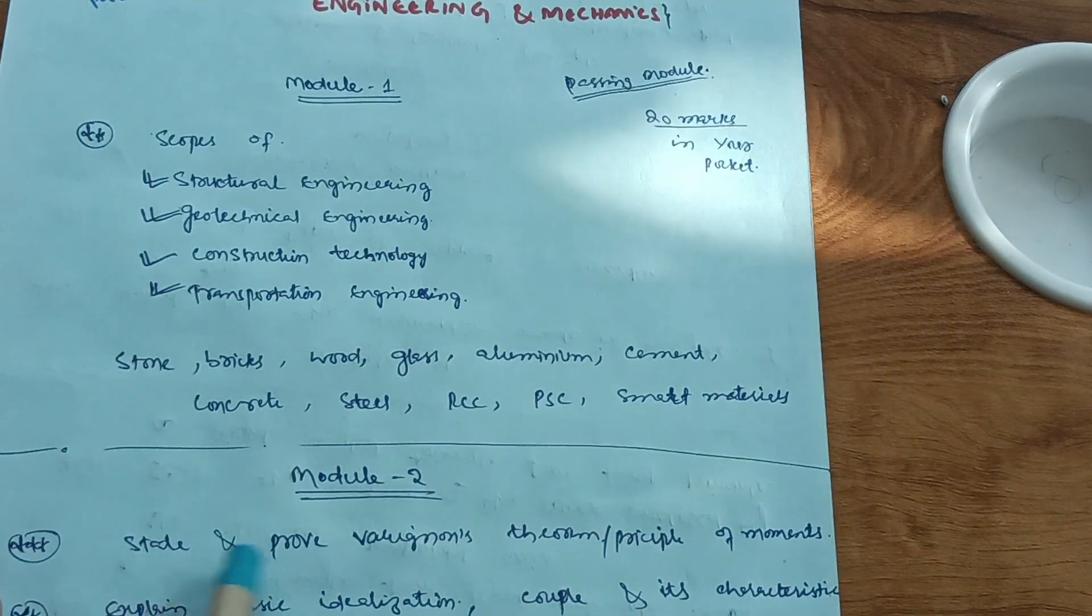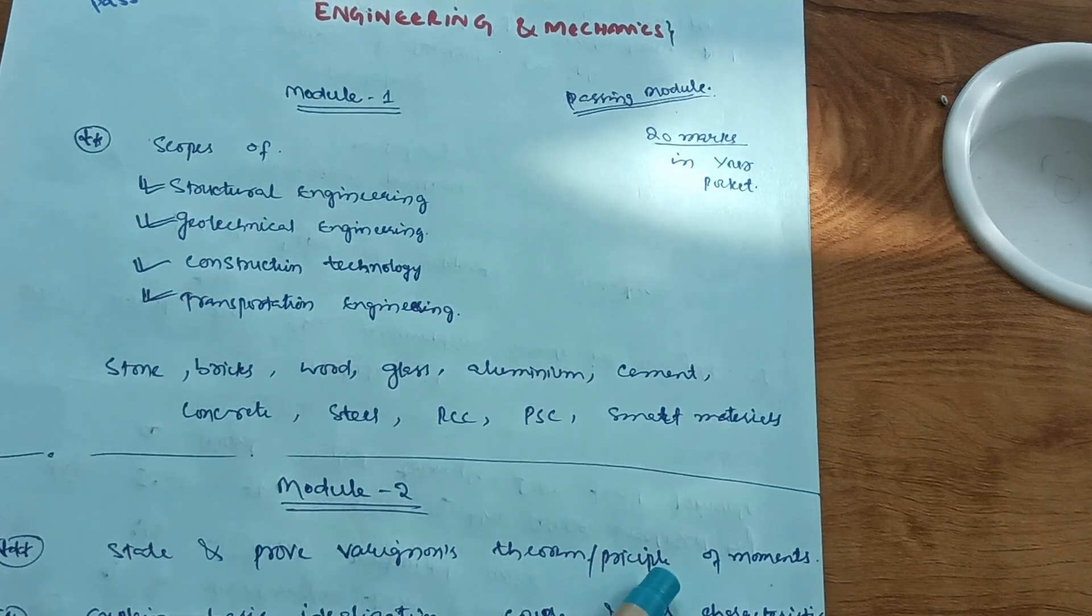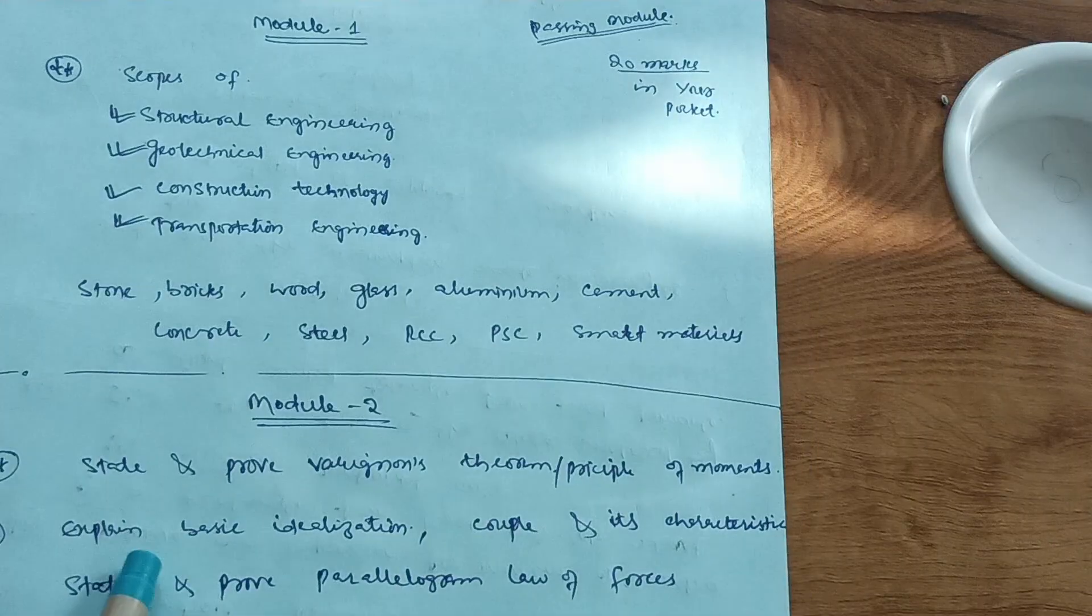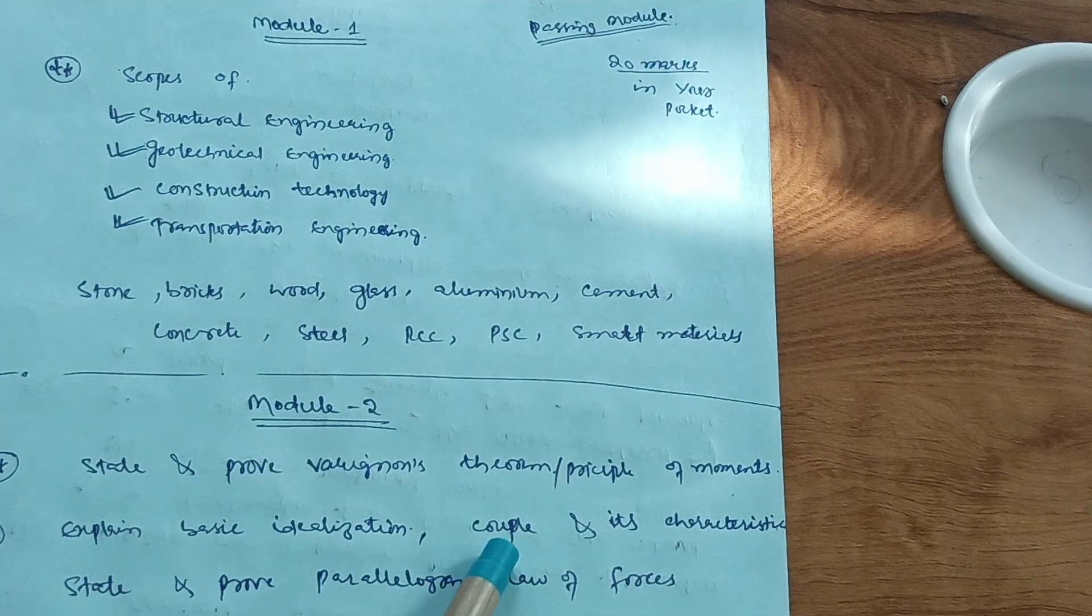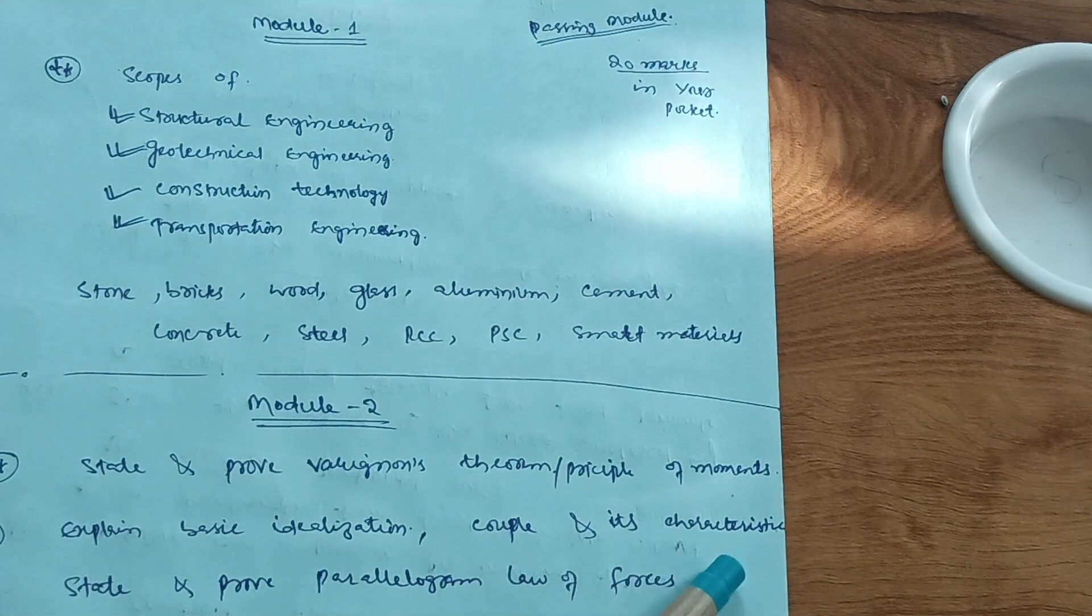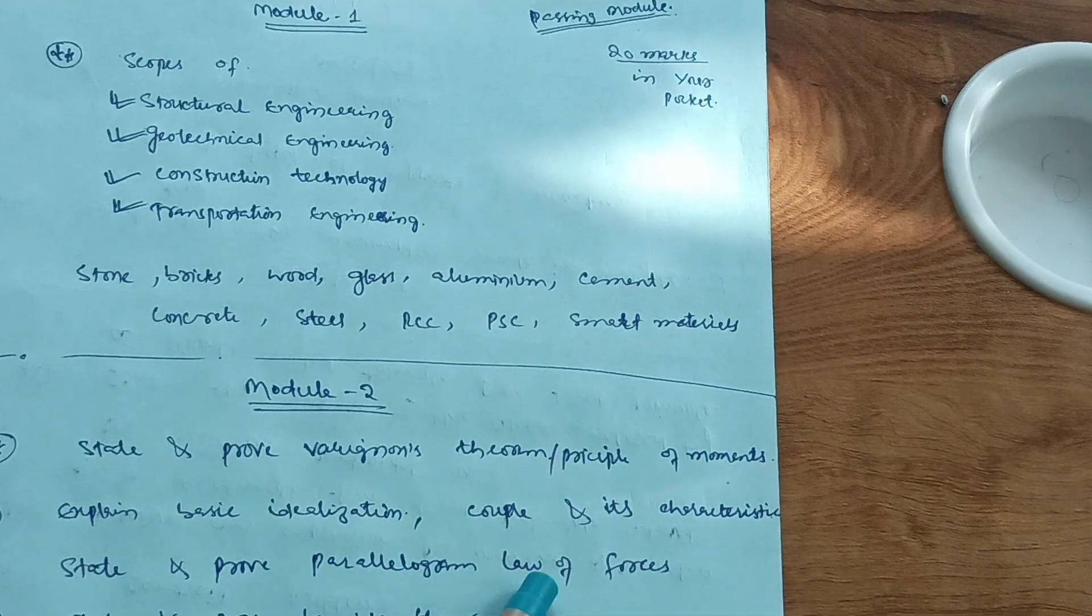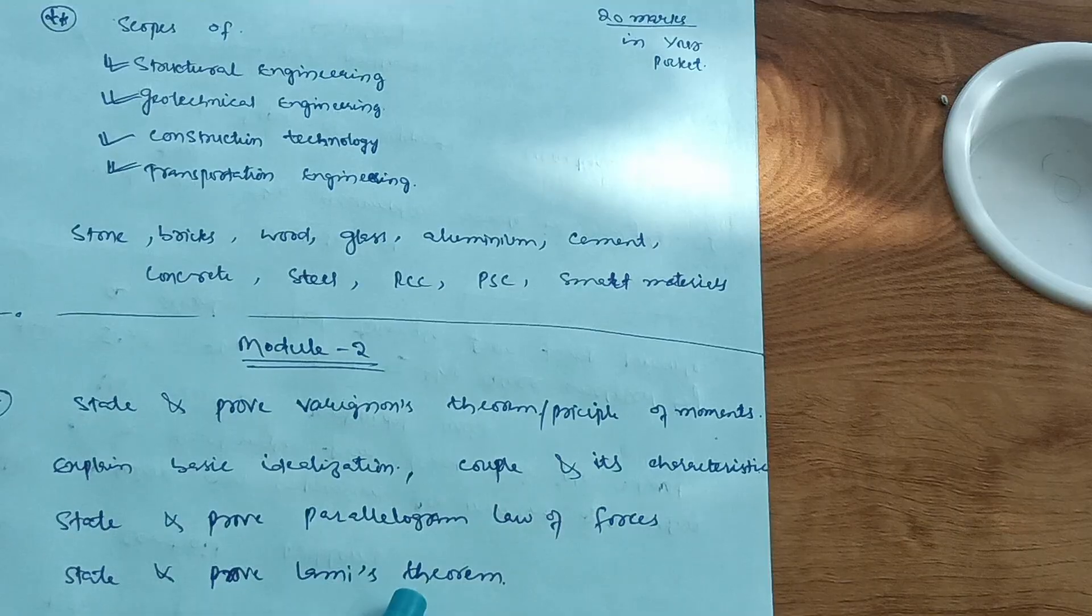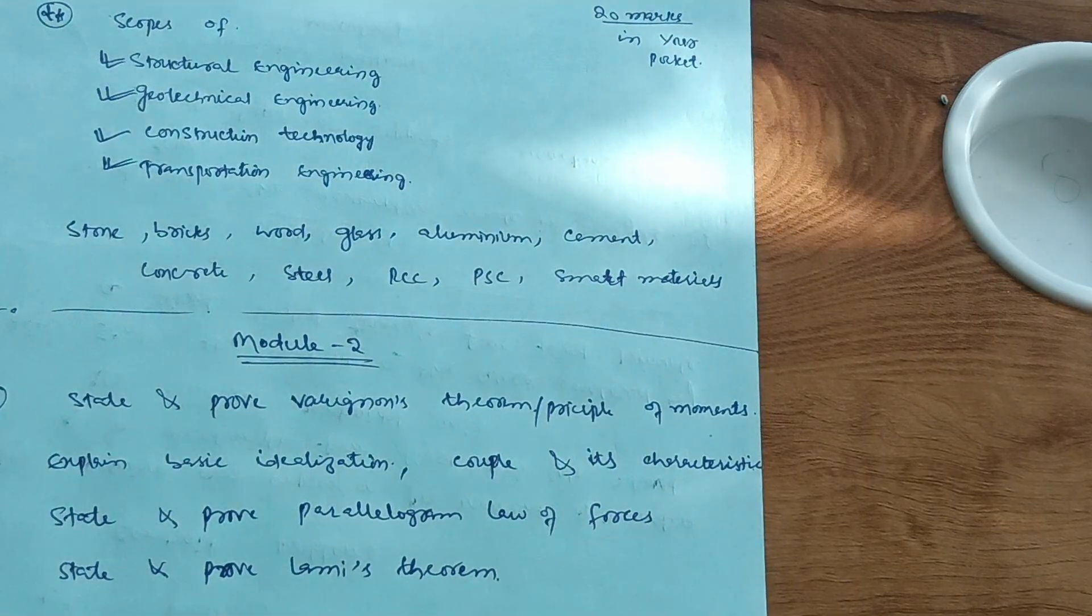First of all, state and prove Varignon's principle of moments. This is the most important question. Also, I have taken idealization, what is the couple and its characteristics, state and prove parallelogram law of forces. Also, state and prove Lami's theorem. These four are the theory concepts from module second.